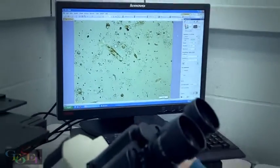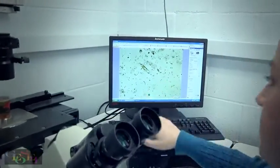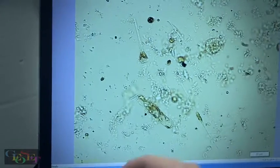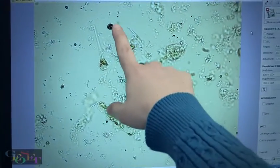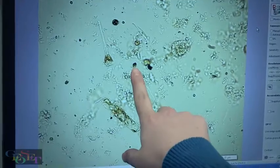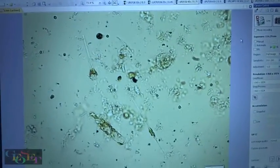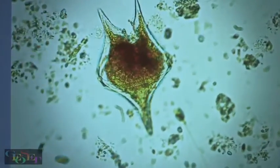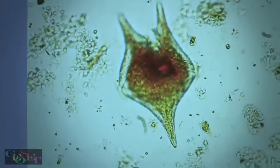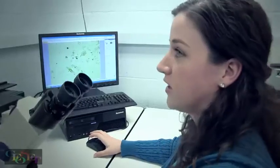These are two examples of two different diatoms that were in my sample. And we can see another one here. There are a few small cells. And so essentially I go through the sample and I count and identify the different types of phytoplankton and then use that for community analysis.